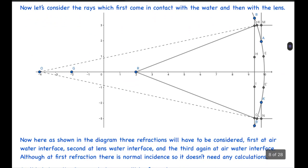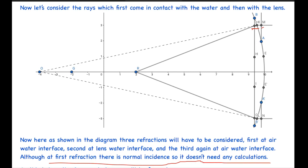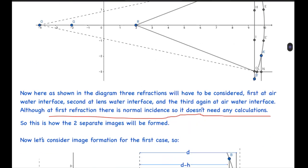Now let's consider how the second image will form. Let's consider the rays which come into contact with the water first and then with the lens. As shown in the diagram, three refractions will occur: first at M, then at K, and then at P — which are first at water-air interface, then at water-lens interface, and then at lens-water interface. At the first refraction, there is normal incidence, so it passes undeviated and doesn't need any calculations. So it can be ignored.